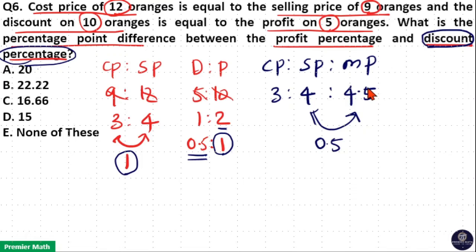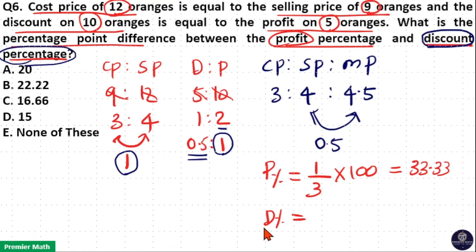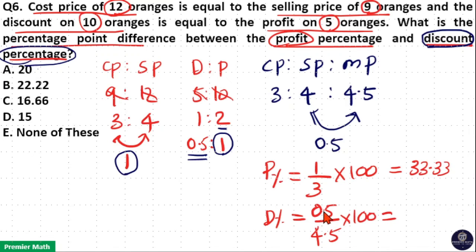Now if mark price is 4.5 units, we can find the discount percentage. First, profit percentage: the difference between sell price and cost price is 1 unit, and this 1 unit is received from cost price of 3 units, so profit percentage equals 1 by 3 into 100 which is 100 by 3, equal to 33.33%. Discount percentage: discount is 0.5 unit from mark price of 4.5 units, so 0.5 by 4.5 into 100. Since 5 goes 9 times in 45, this equals 100 by 9, which is 11.11%.